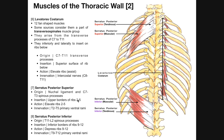This muscle projects laterally and inferiorly and inserts on the upper borders of ribs 2 through 5. When this muscle contracts, it pulls the insertion toward the origin, acting to elevate ribs 2 through 5. The innervation is through the primary ventral rami of T2 through T5, because it inserts on ribs 2 through 5.